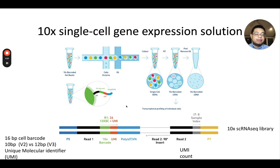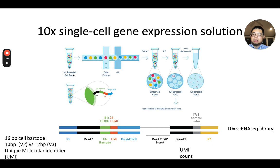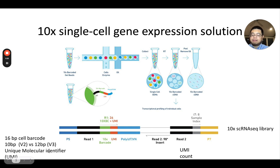This is the final look of the sequencing library. You have R1 (the forward read) and R2 (the reverse read). P5 and P7 are the Illumina sequencing adapters. The R1 read contains a 16 base pair cell barcode from the gel beads, plus a 10 or 12 base pair unique molecule identifier (UMI) depending on the version — v2 is 10 bp, v3 is 12 bp. UMIs are used to deduplicate PCR duplicates. The R2 read contains the genomic information, so although it is paired-end, really only one end contains the genomic information.